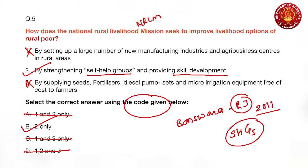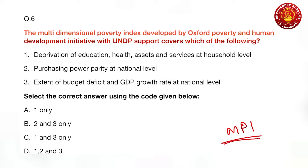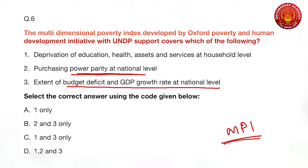The sixth question covers the Multi-Dimensional Poverty Index (MPI), developed by the Oxford Poverty and Human Development Initiative (OPHI) and the United Nations Development Program (UNDP). The question asks which areas it covers. The second and third statements — about purchasing power parity at national level and budget deficit and GDP growth rate — are clearly not related to MPI. Therefore the correct option is one only: deprivation of education, health, assets, and services at the household level. Recently, MPI has replaced Human Poverty Index 1 and Human Poverty Index 2 for measuring poverty.